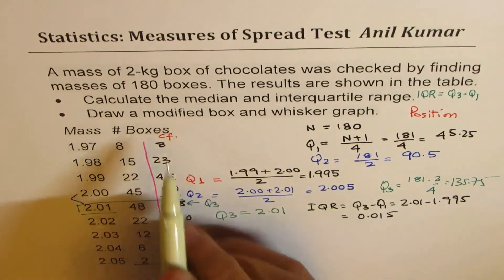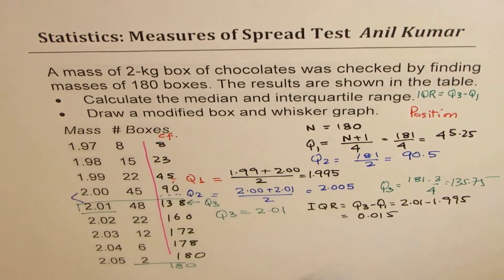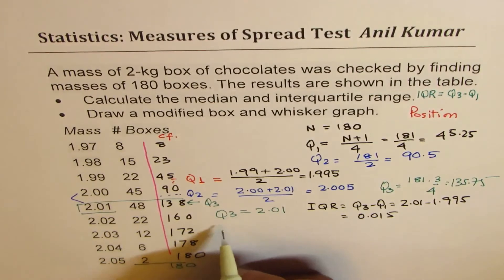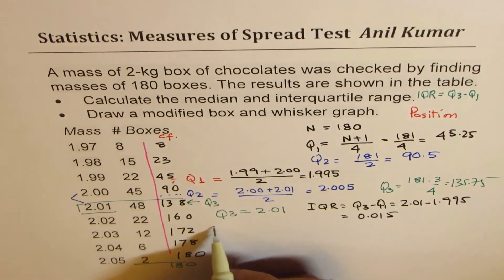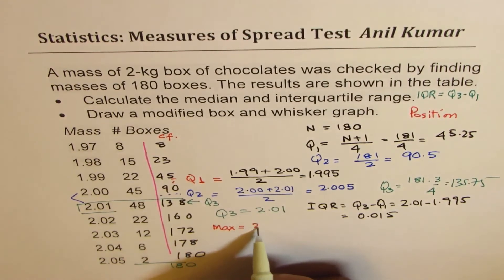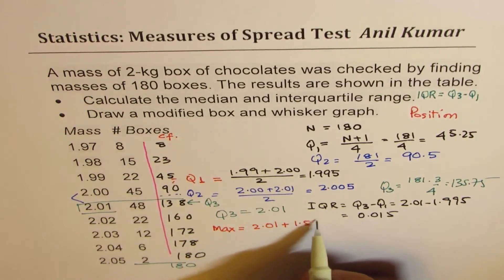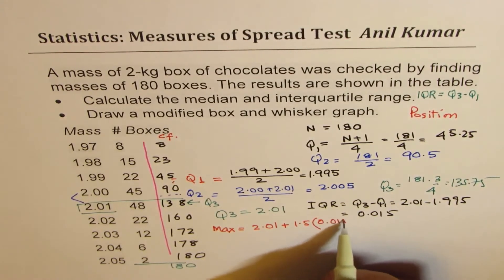So outliers on the maximum side will be Q3, 2.01, plus 1.5 times the IQR, which is 0.015.